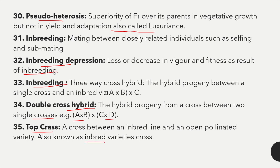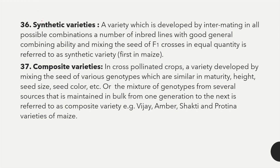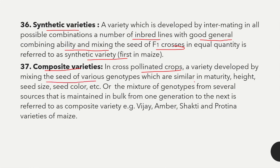Synthetic varieties are developed by intermating in all possible combinations a number of inbred lines with good general combining ability, then mixing seeds of F1 crosses in equal quantity. Composite varieties in cross-pollinated crops are developed by mixing the seeds of various genotypes which are similar in maturity, height, seed size, and seed color, maintained in bulk from one generation to the next.